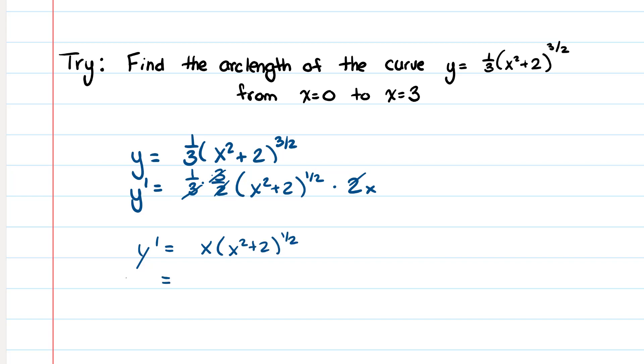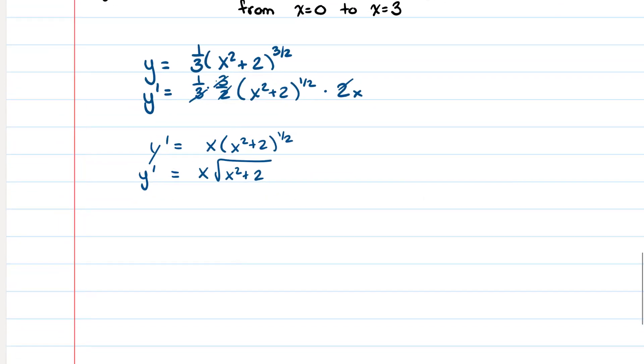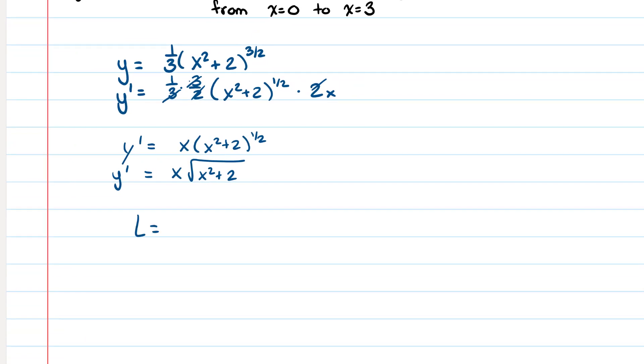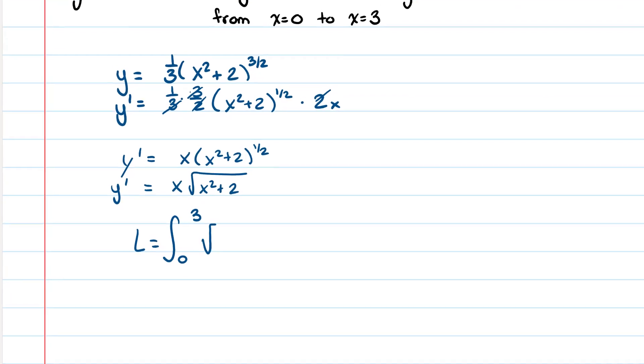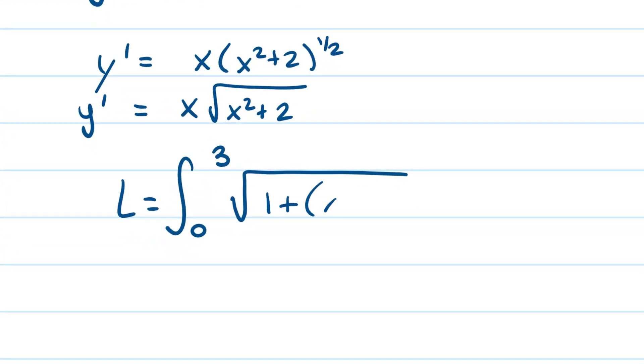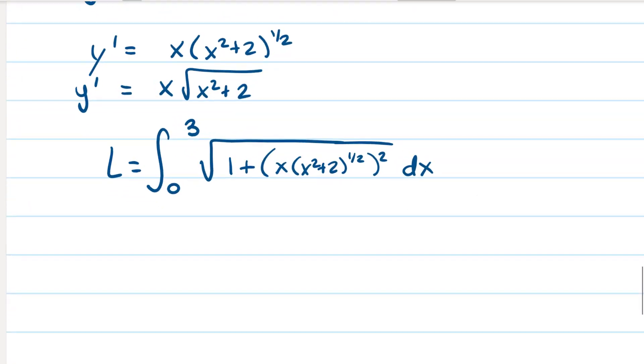So just simplifying that, x square root x squared plus 2. Now I'm going to go ahead and plug it into my equation. So it's the integral from 0 to 3 square root 1 plus x, x squared plus 2 to the 1 half squared dx. So we're just going to simplify this now.